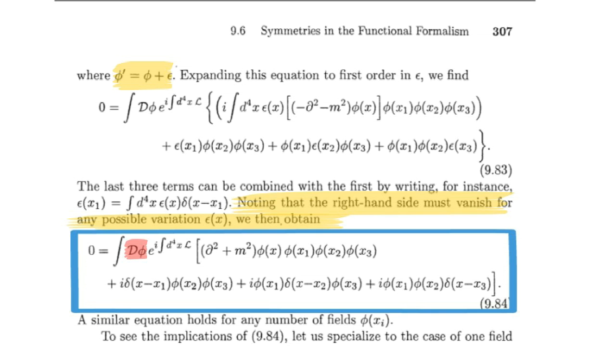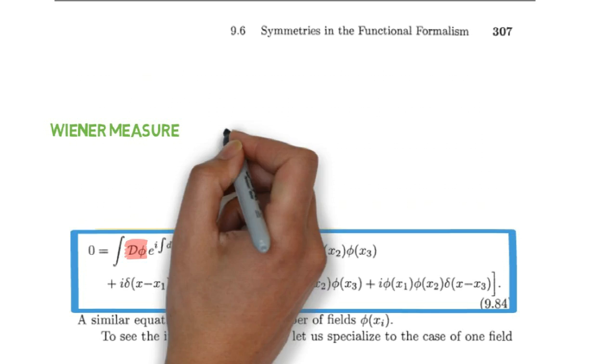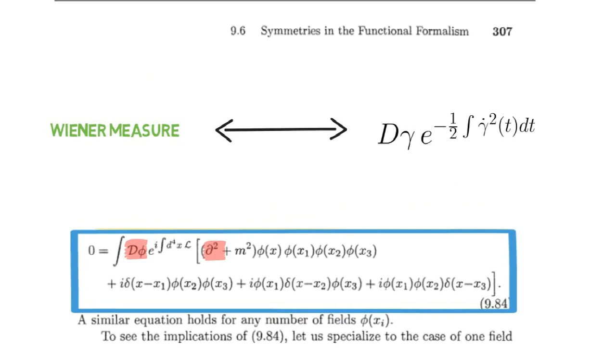Second, supposing we could make sense of the measure as a whole, there is no reason for it to be supported on configurations that are twice differentiable. Wiener measure, for example, which can be described by an analogous path integral involving derivatives, is supported only on continuous paths. And so troubling statements like the ones I've just indicated go on and on, in both this textbook and many others.